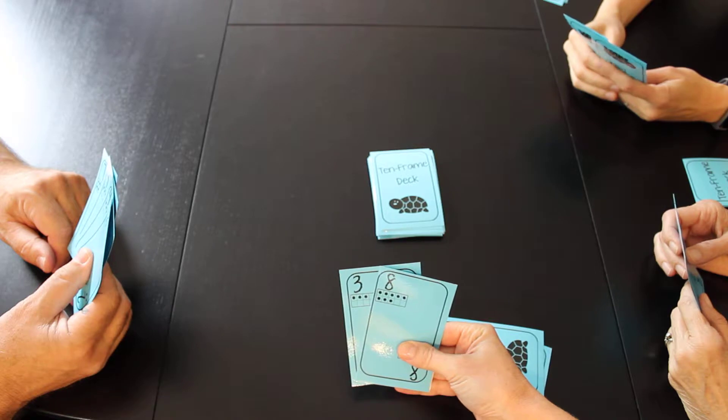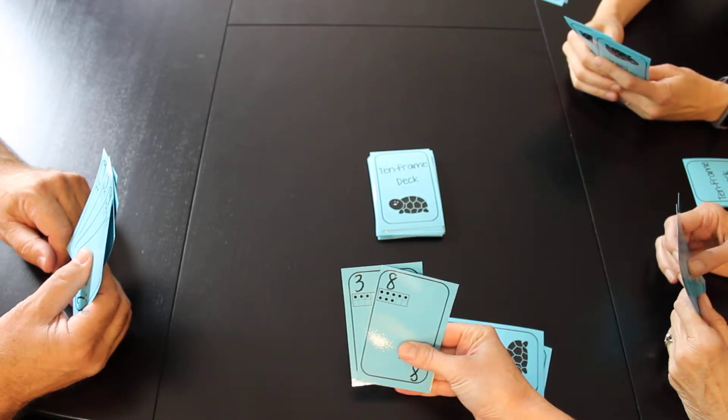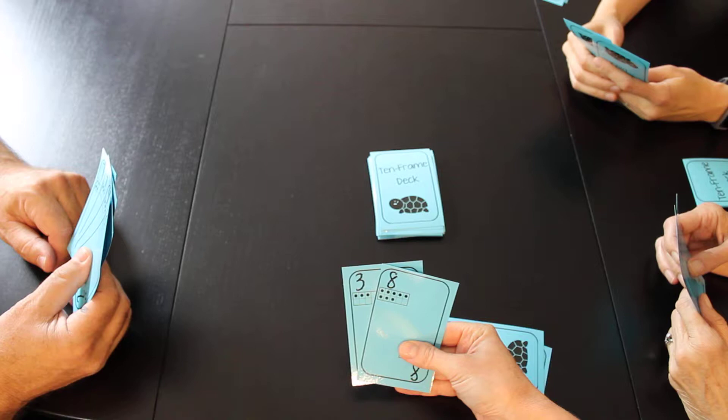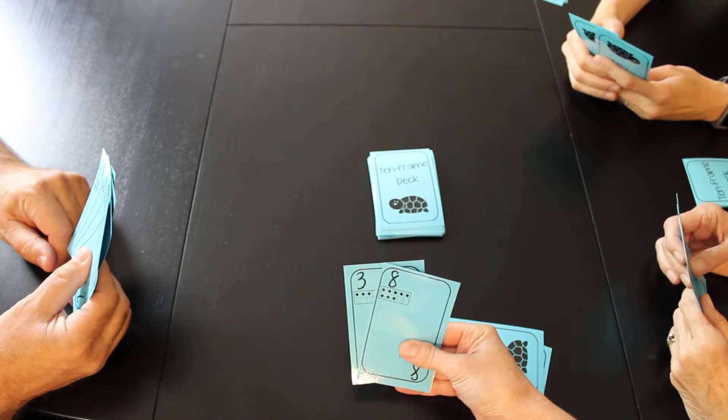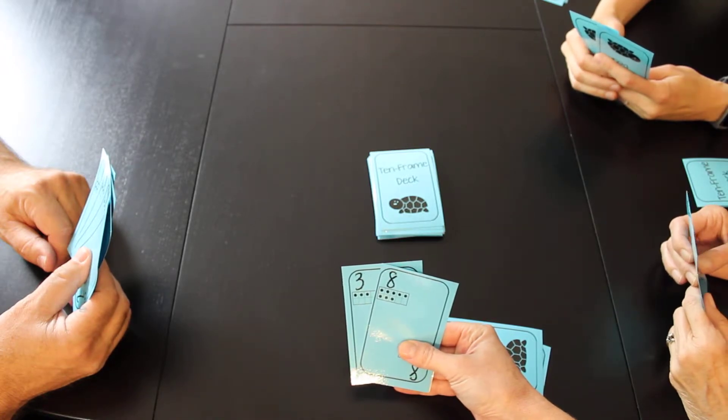So then you can go ahead and start, Laura. Okay, you can ask anyone for a number that goes with one of your numbers. Cheryl, do you have a two? Do I say go fish or do I say ten frame? You say go fish. Go fish.